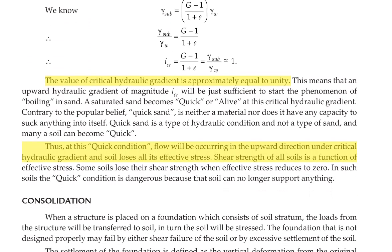The shear strength of all soils is a function of effective stress. Some soils lose their shear strength when effective stress reduces to zero. In such soils, the quick condition is dangerous because the soil can no longer support anything. The quicksand is a type of hydraulic condition and not a type of sand, and many soils can become quick.